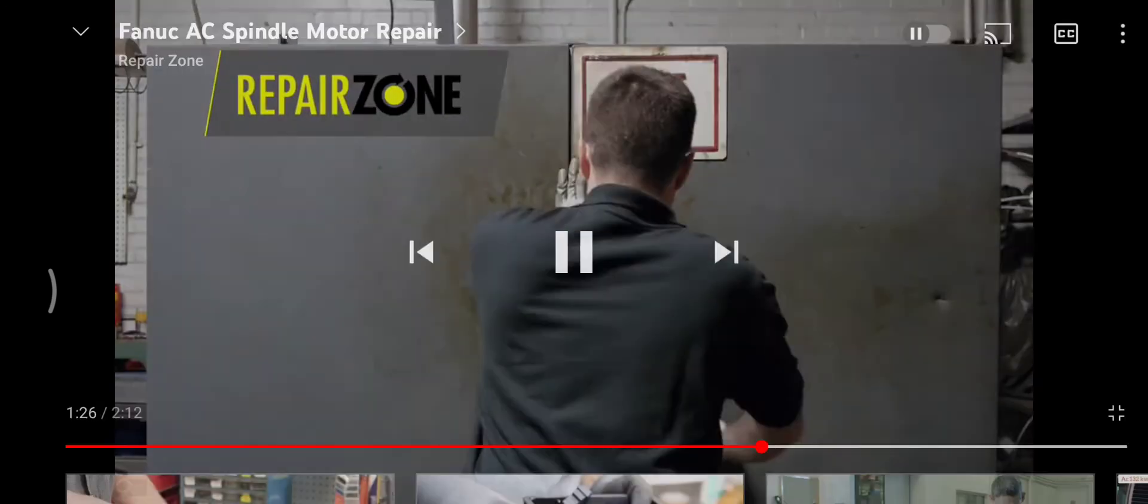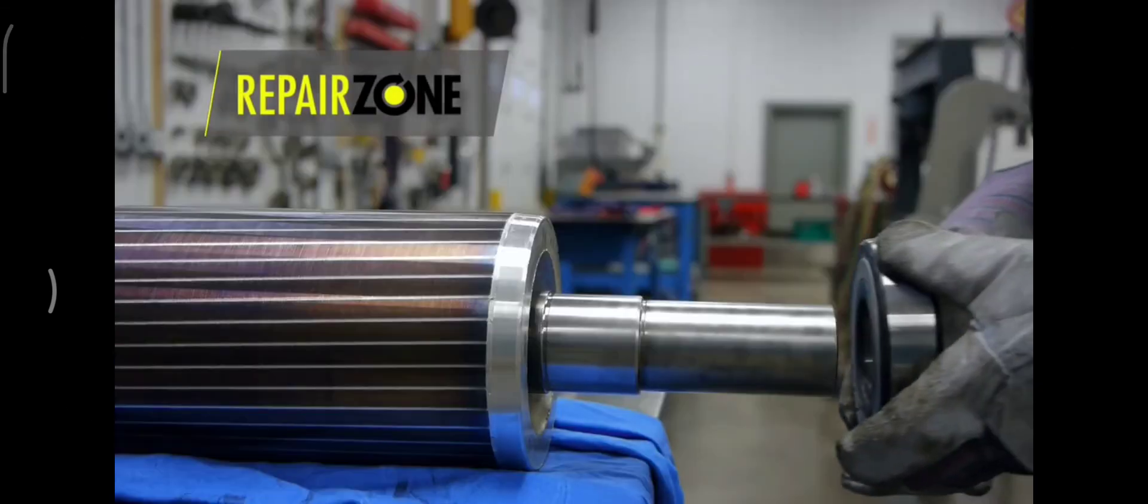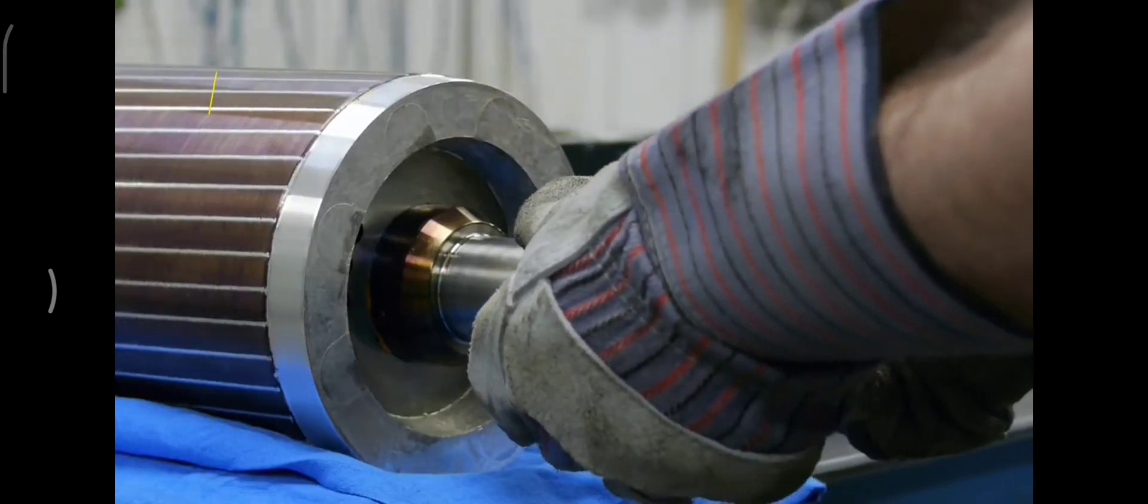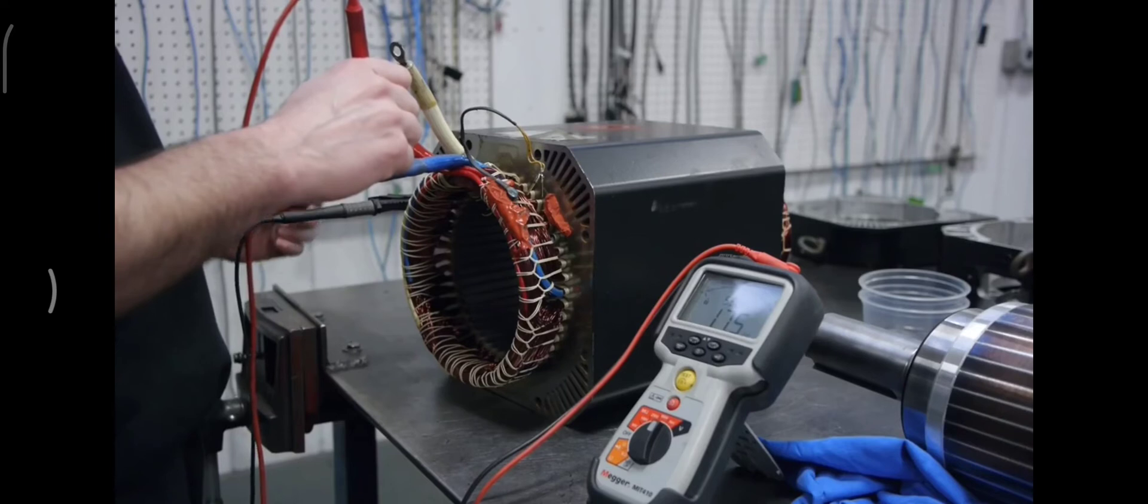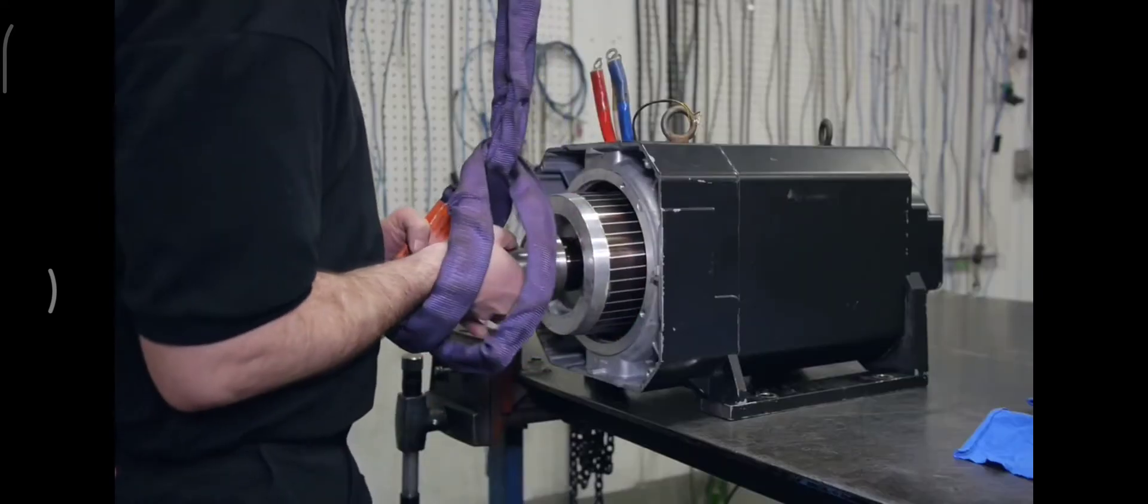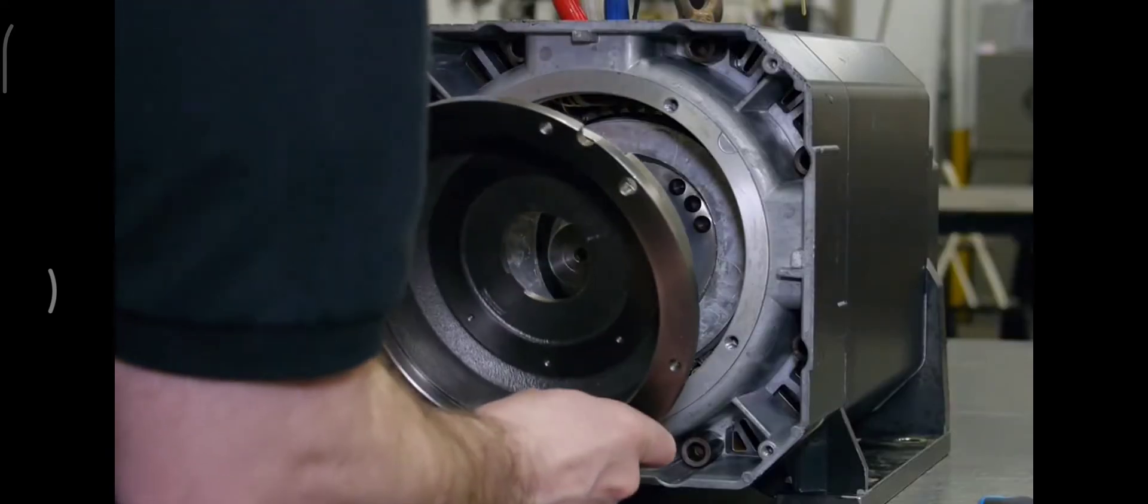It is then baked overnight in our oven. During assembly, new bearings are installed. The stator is megged again after the wash and bake. The rotor is put into place. Motor housing and end bell are installed.